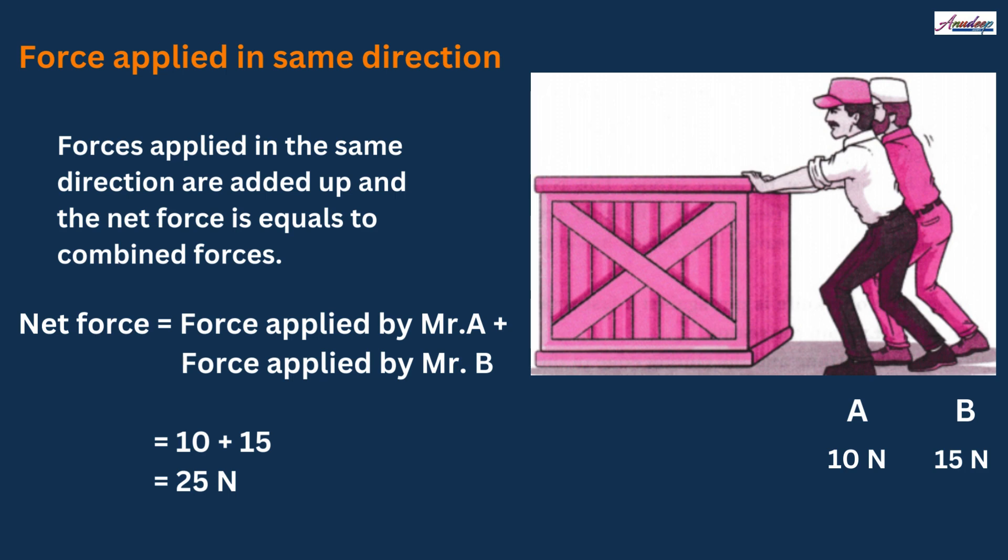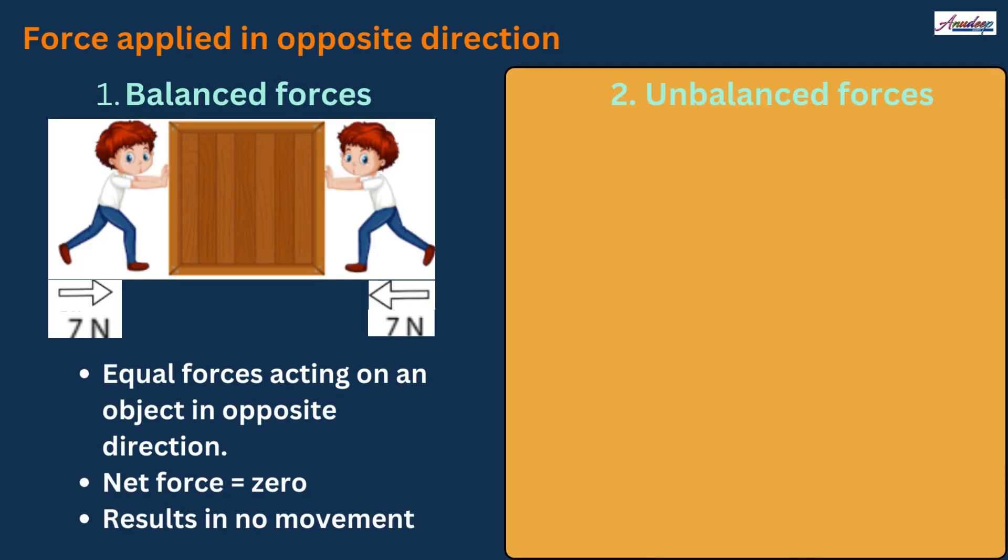So when forces are applied in the opposite direction, then there will be two cases. One will be balanced forces and the second will be unbalanced forces. So first let's understand the balanced forces. Suppose you and your friends have pushed one box with equal force, same force, but in the opposite direction. So will the box move? It will not move. Here both forces will cancel and the net force will be zero which will result in no movement of the box. So balanced force means the net or resultant force is zero.